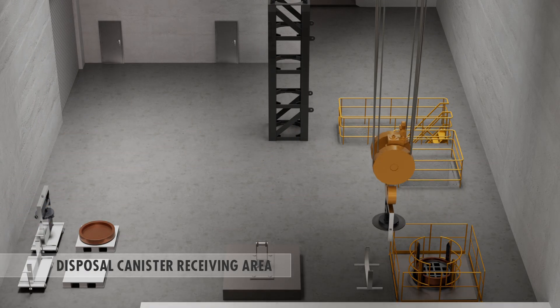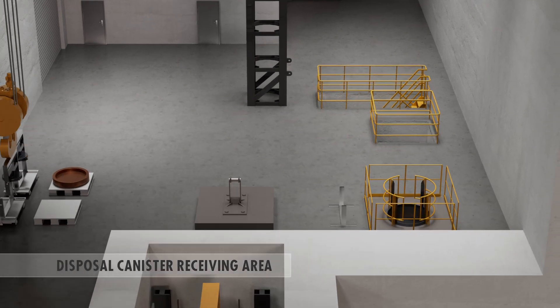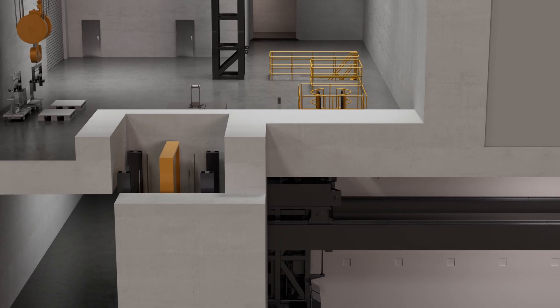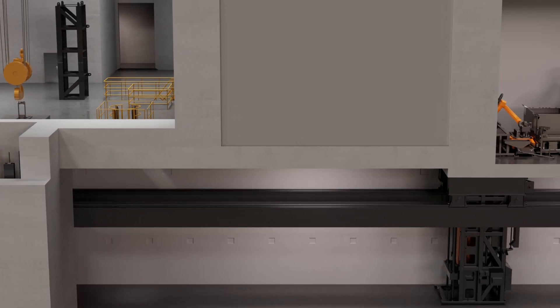The inner lid is installed in place. The copper lid is lowered onto its own hoist on the canister transfer trolley, which is used to transfer it to await welding.